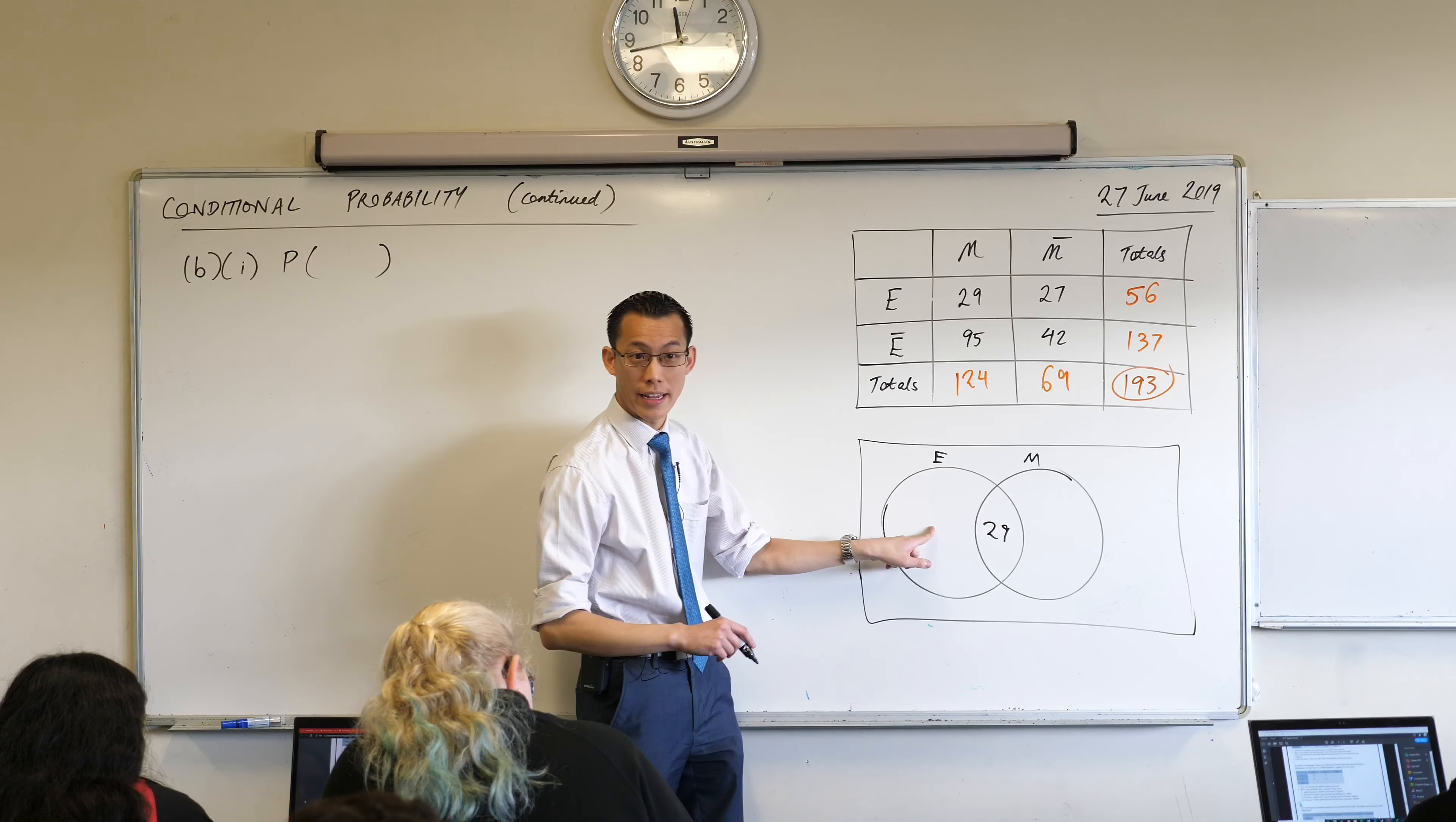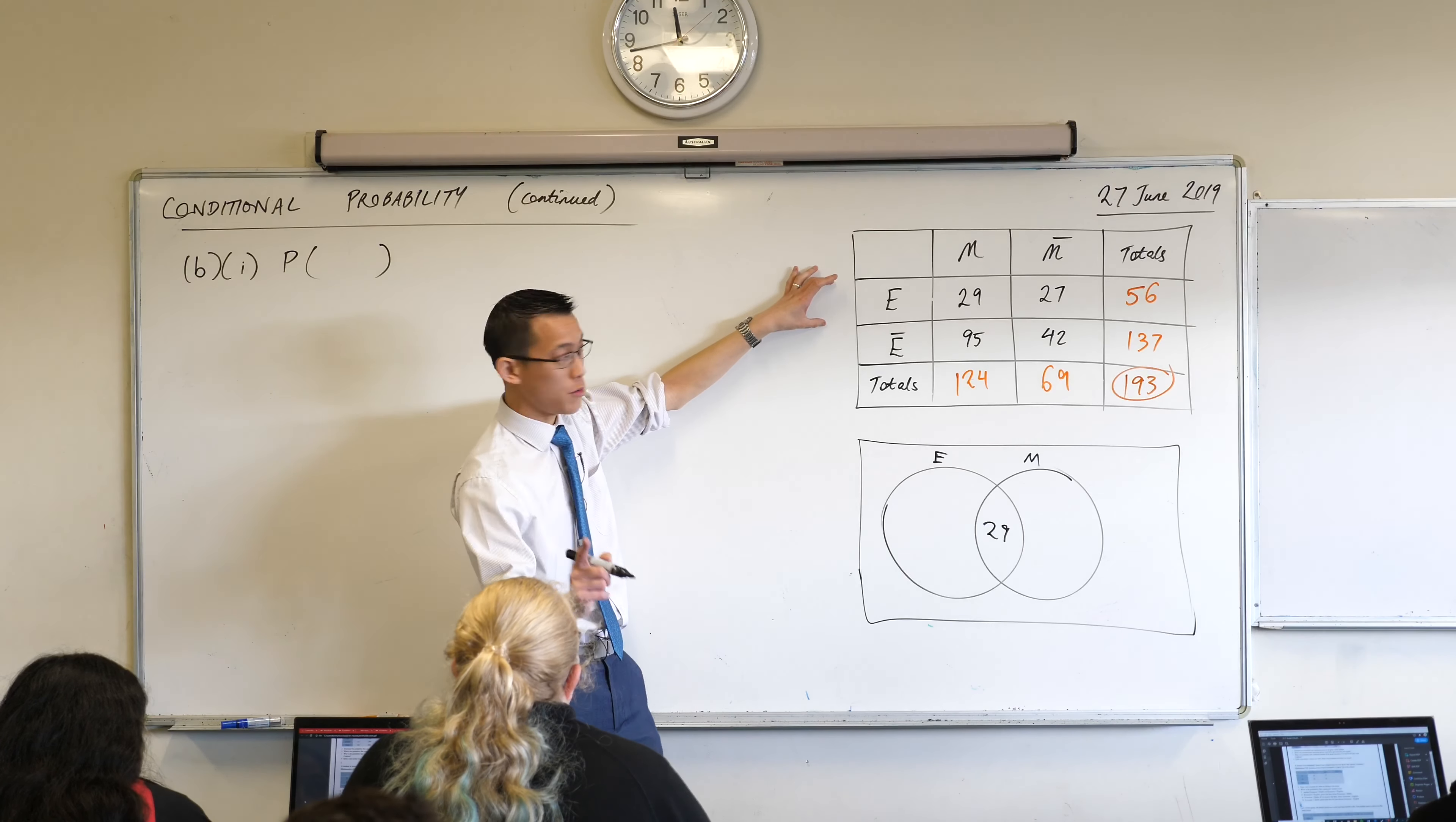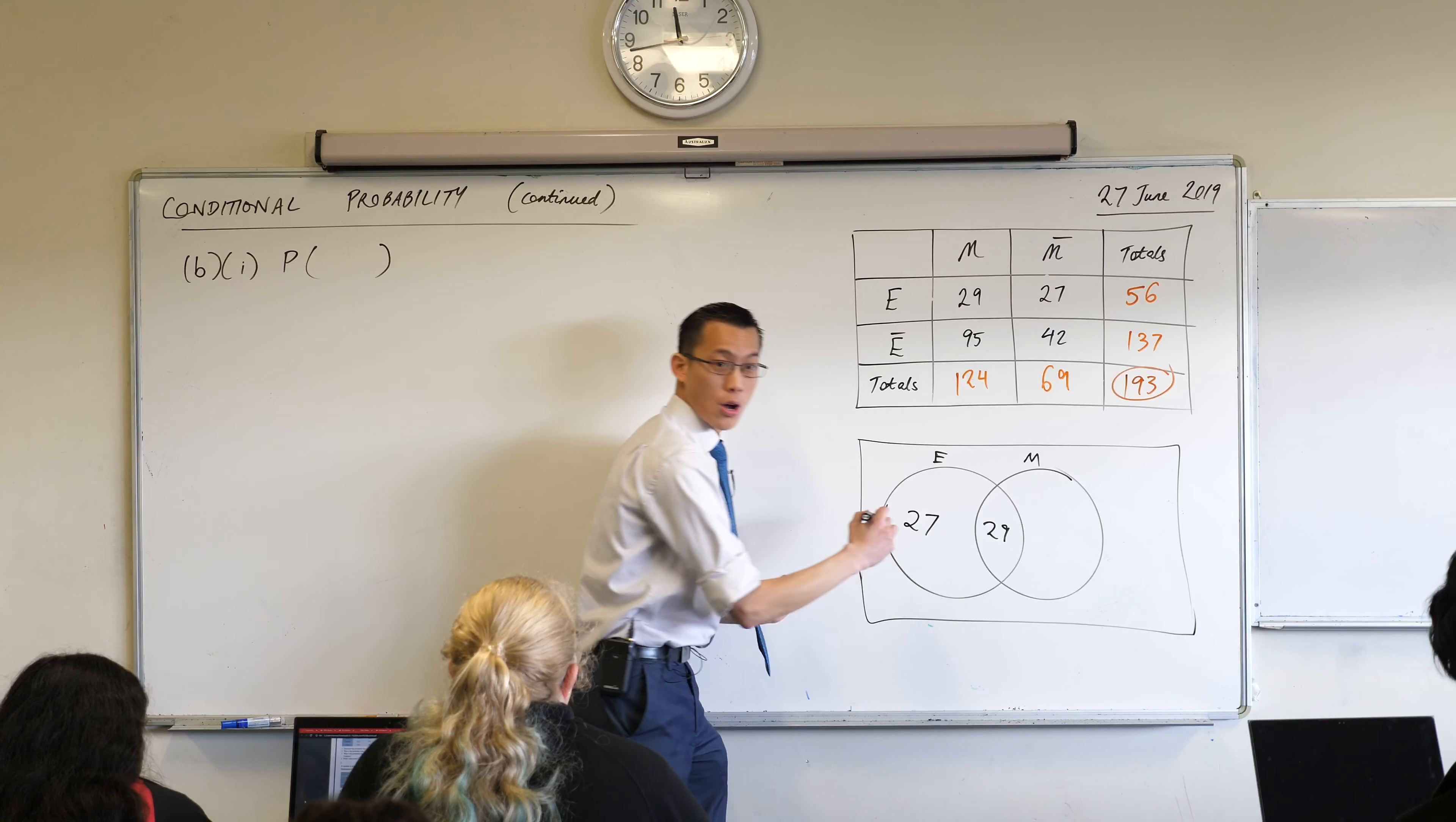They do extension 1 English, so what that corresponds to on the table is the top row, right? But they don't do math, so that's the, well, don't do extension 1 math. That's this column, isn't it? So this is the number that belongs over here, right?